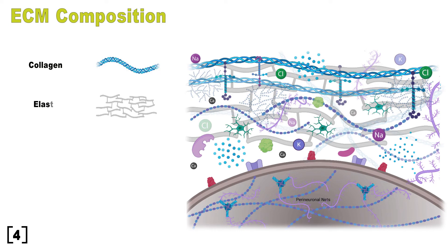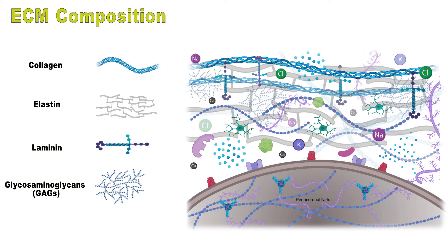However, there are other molecules such as elastin, fibronectin, laminin, glycosaminoglycans, or GAGs, which are long, unbranched polysaccharide chains.